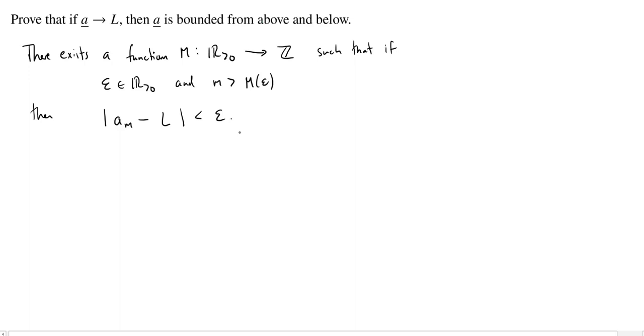Our goal is to show that there is some number above all the terms in the sequence A, as well as some number below all the terms in the sequence A. So how do we do that using this definition for convergence?